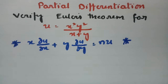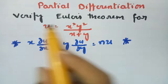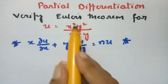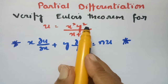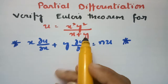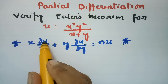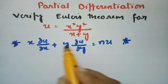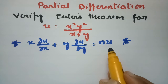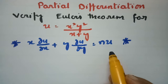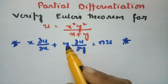In today's video I am going to verify Euler's theorem, and this problem is from partial differentiation. According to Euler's theorem, we have x into ∂u/∂x plus y into ∂u/∂y is equal to n into u. So for that we have to verify.